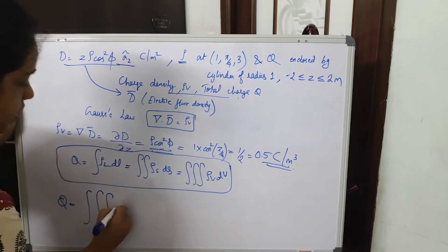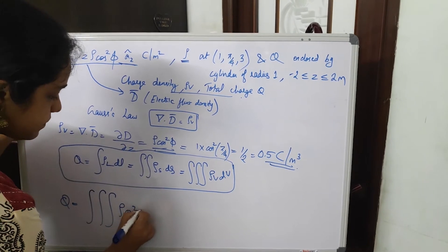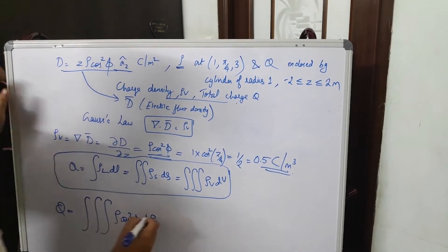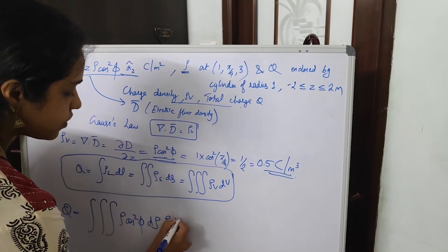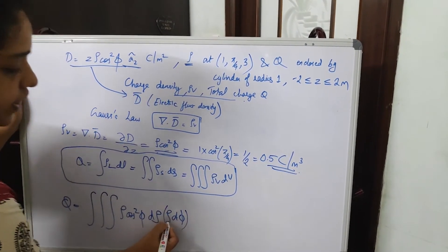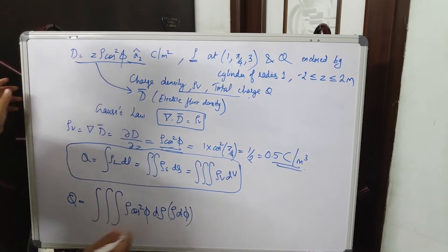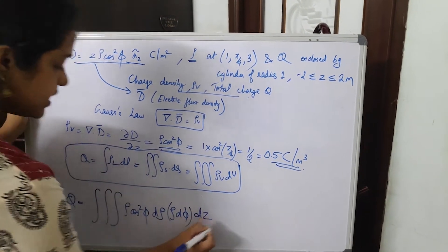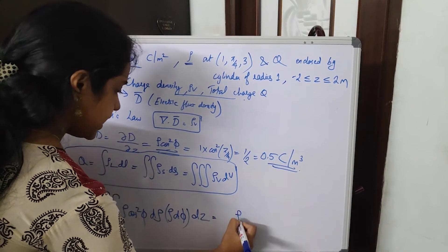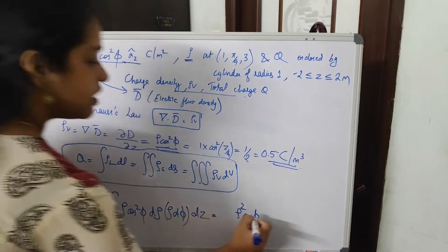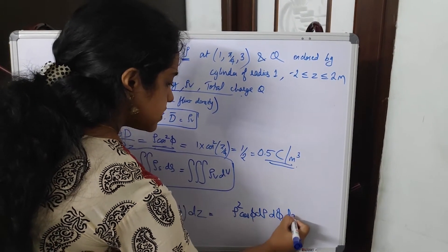So here it is rho cos square phi D rho, and instead of D phi you write rho D phi. I told in the earlier class, instead of D phi you write rho D phi because D phi corresponds to a change in the angle only. So rho D phi into D Z. So this can be modified as rho square cos phi D rho D phi D Z.